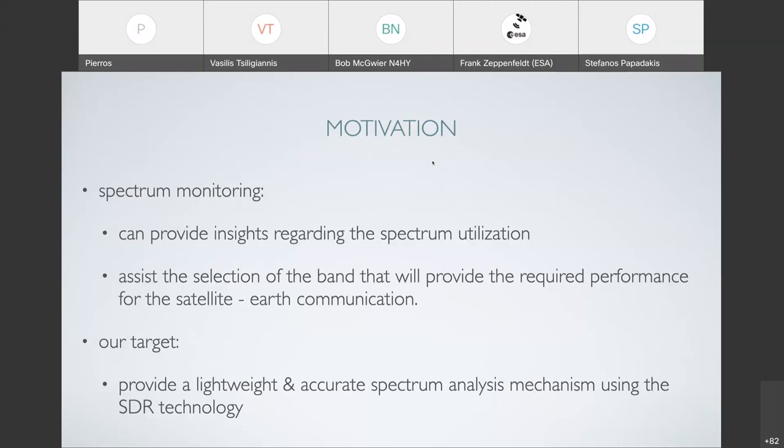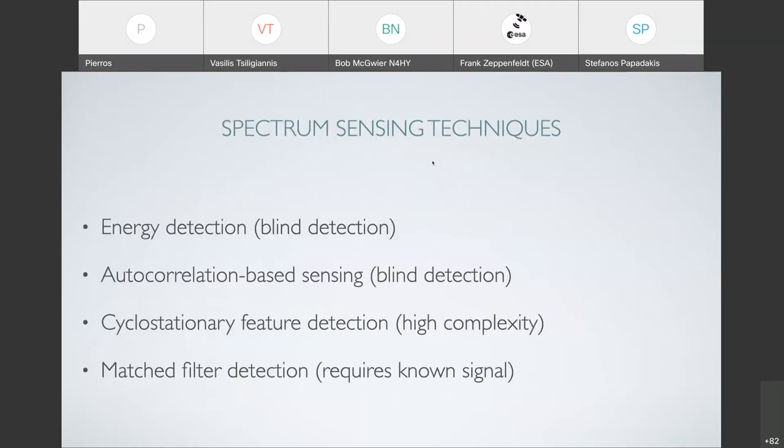This would assist in the selection of the band or part of the spectrum that is required for the performance that we would like for the satellite to earth communication. The target for this project was to provide lightweight as possible and accurate at the same time spectrum analysis incorporating SDR technology. The spectrum sensing techniques, the most typical ones are energy detection, autocorrelation based sensing, cyclostationary feature detection and match filter detection.